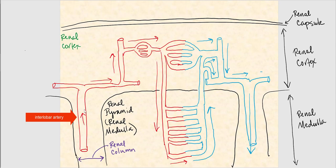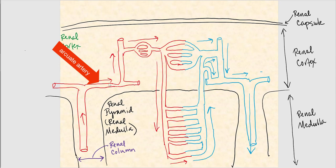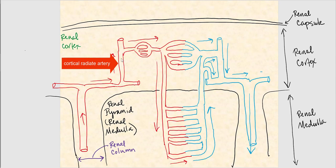Blood continues up through the interlobar artery and then diverges into the arcuate artery, which arches over the base of the renal pyramid — that's why it's called the arcuate artery. This arcuate artery runs at the junction between the renal cortex and the renal medulla.